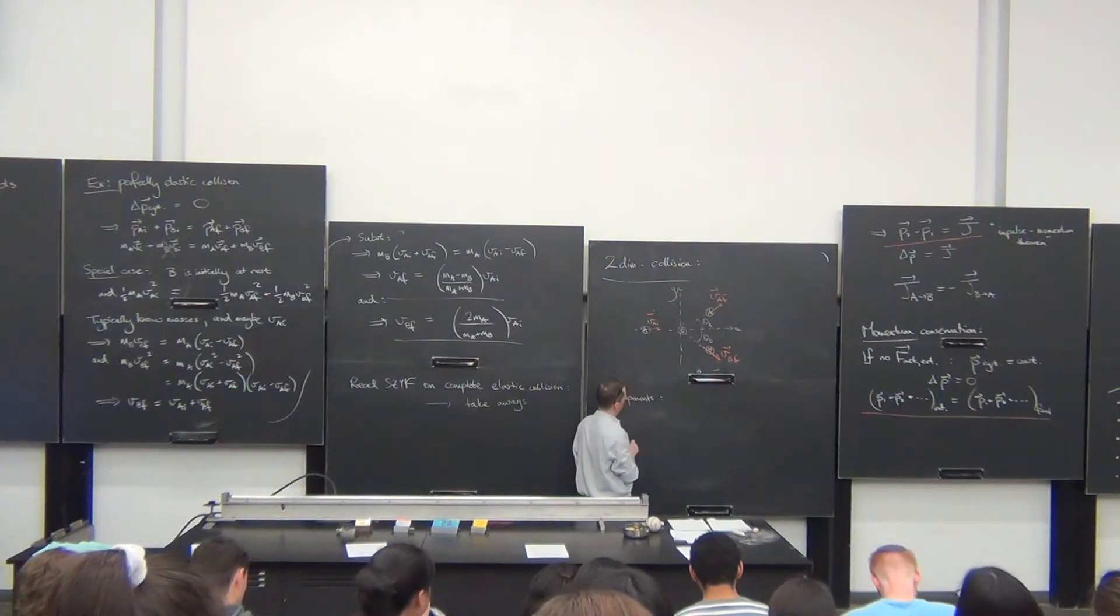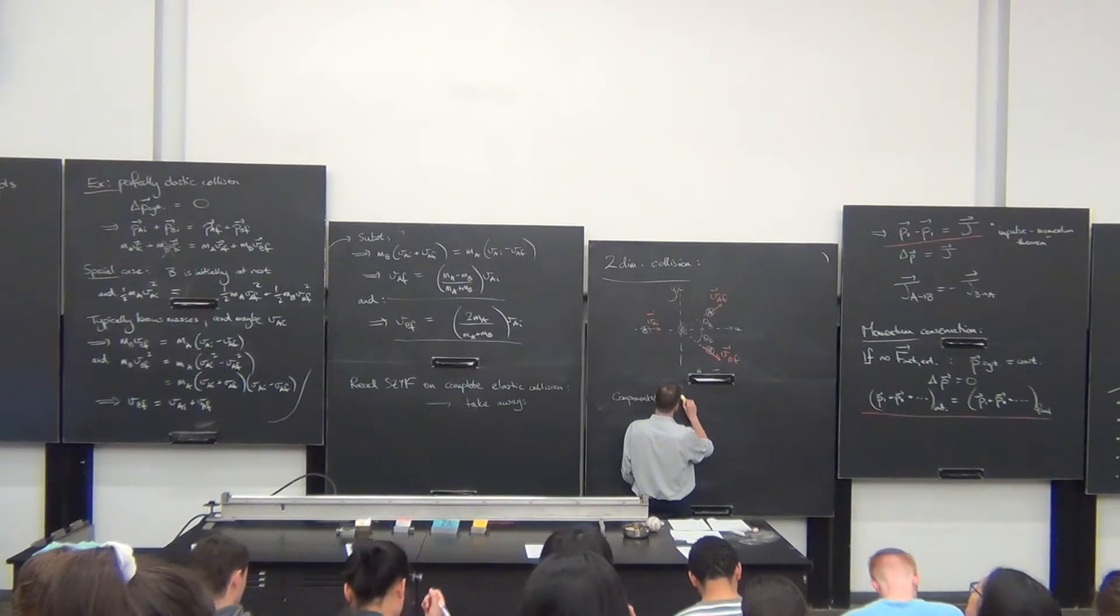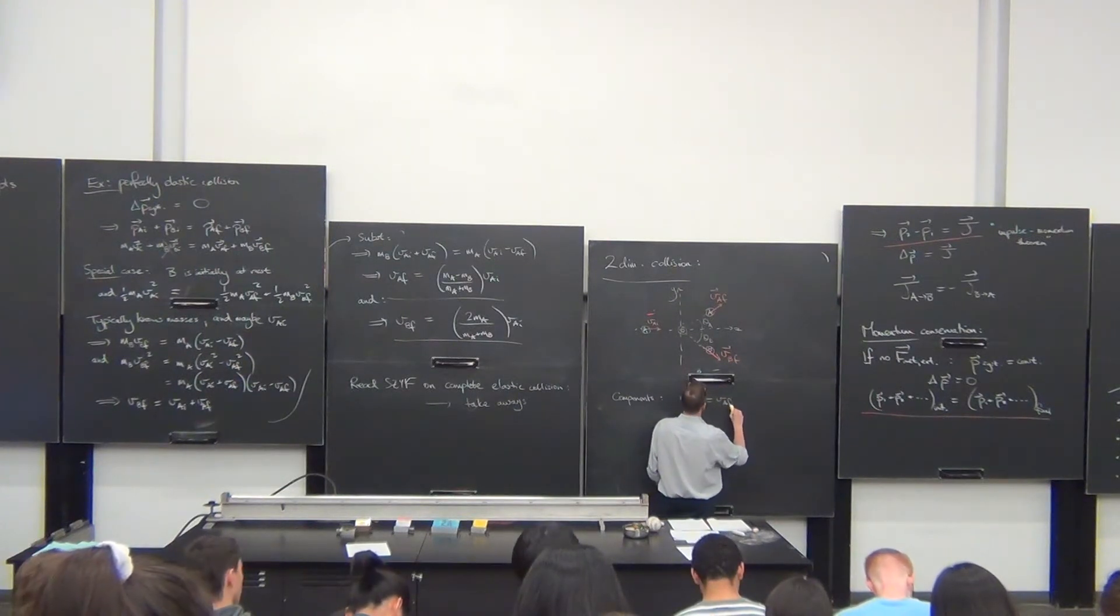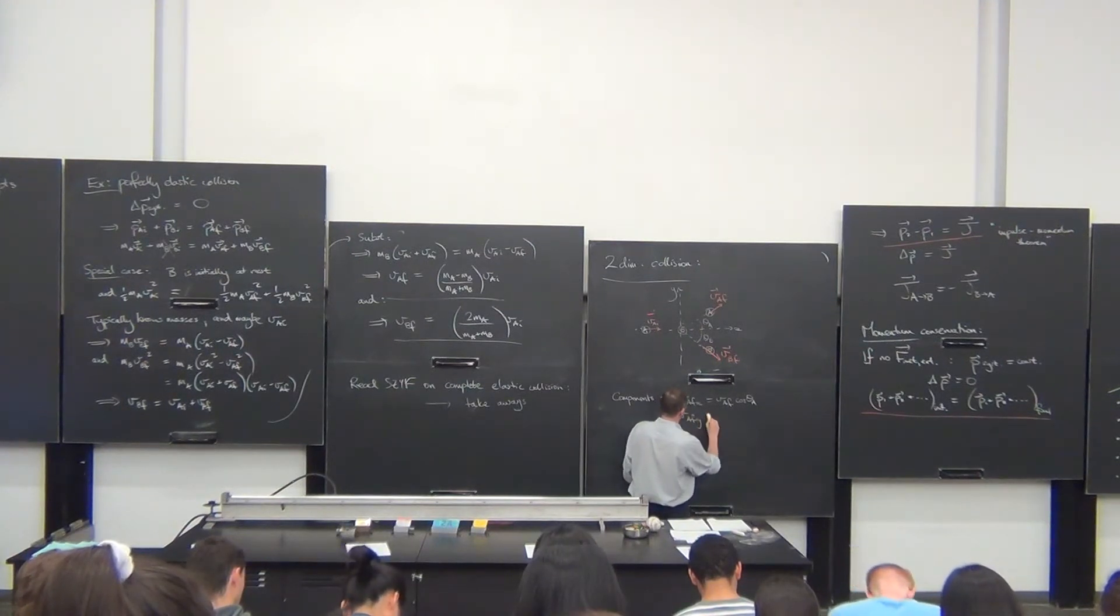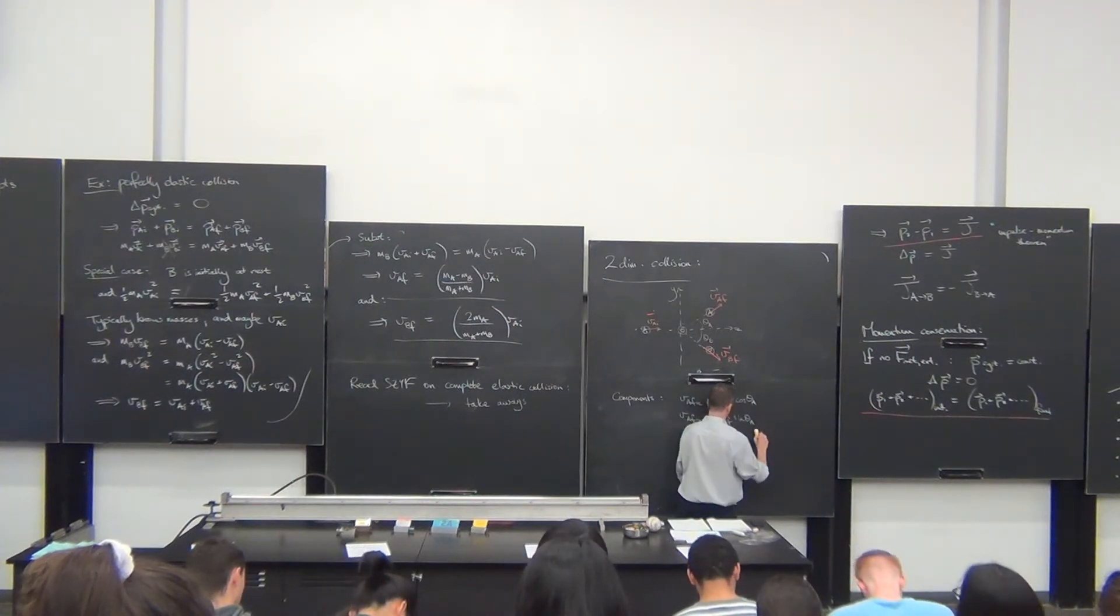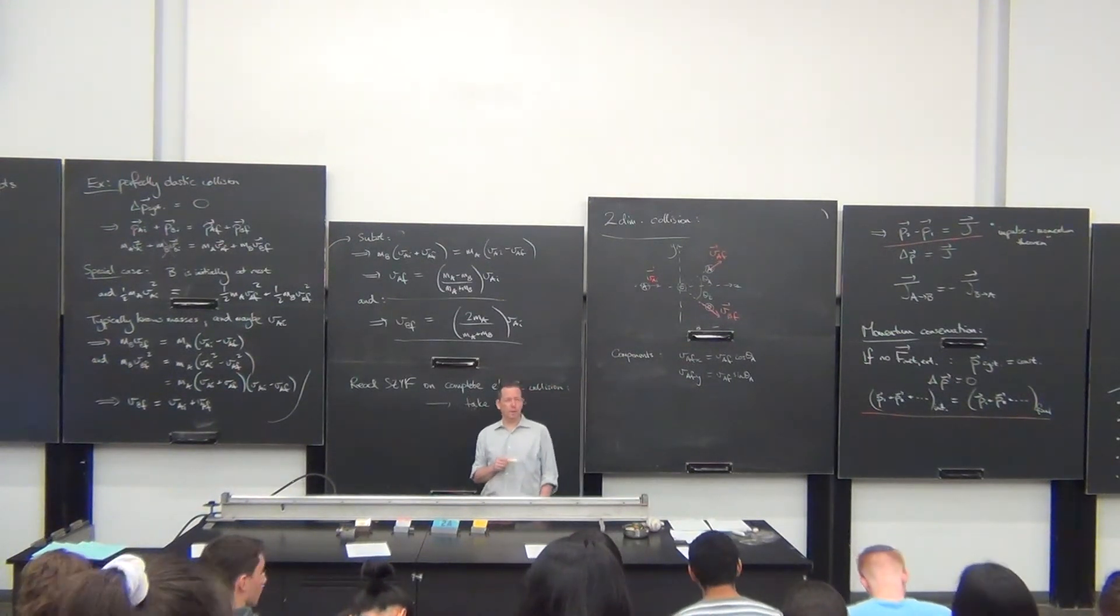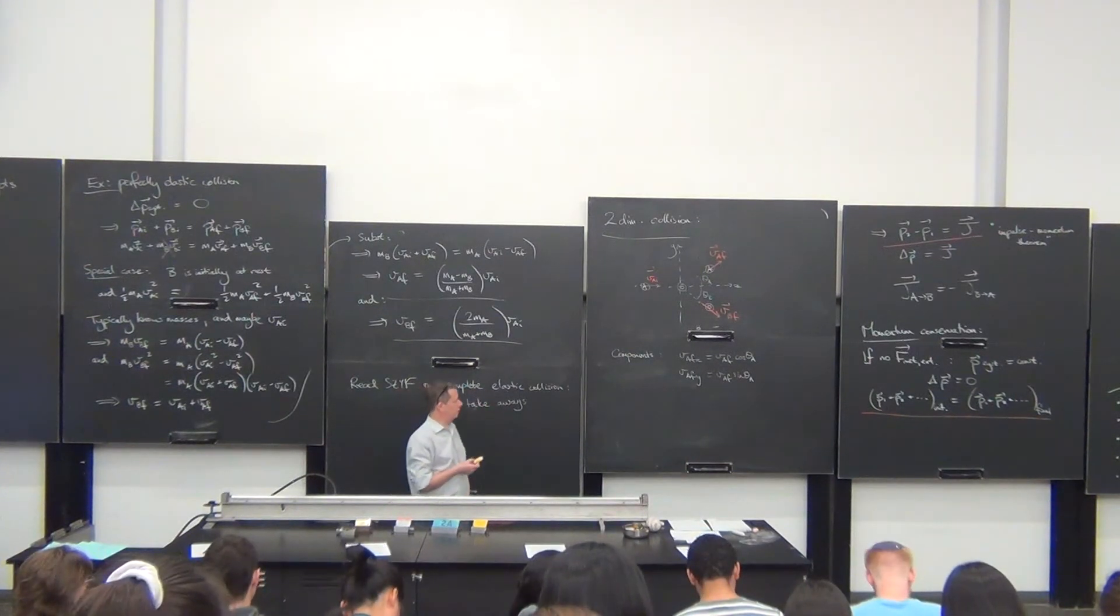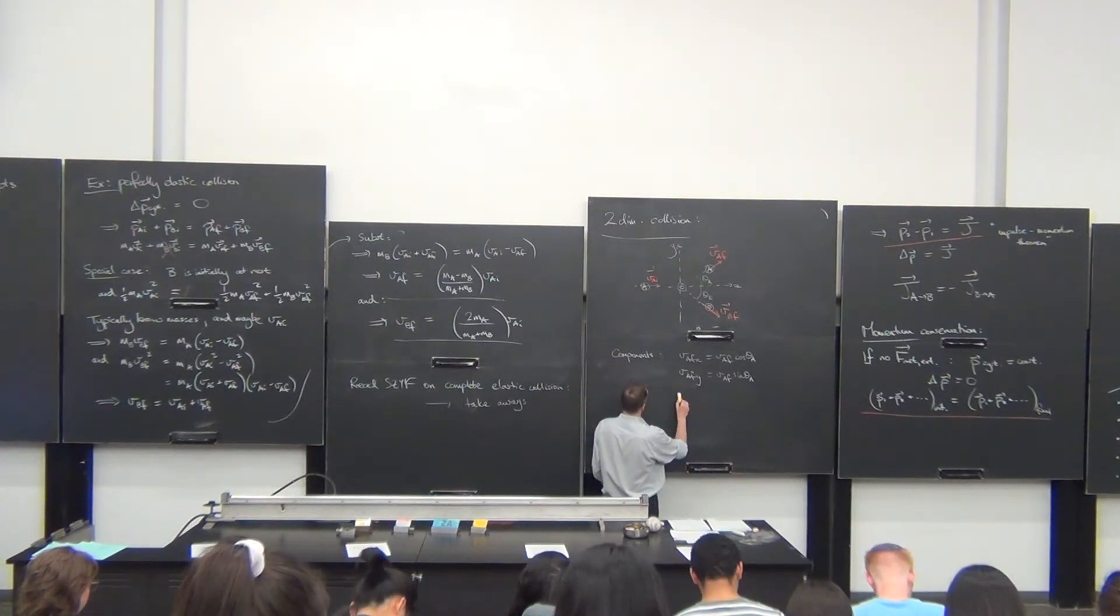For the initial setup, they don't care, but after the collision, they could worry about components. So, V A F in the x-direction is presumably V A F cosine Theta A, and V A F in the y-direction is presumably V A F sine Theta A. And then I will have analogous expressions for the base. So, I'm now putting in components that are parallel with the x-direction axes, as I know I need to. I've been going to apply momentum conservation. So, I'm not going to write that down here, so we're out of time. But similarly for VB.